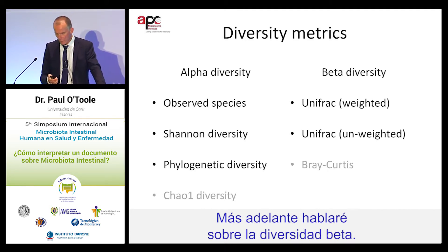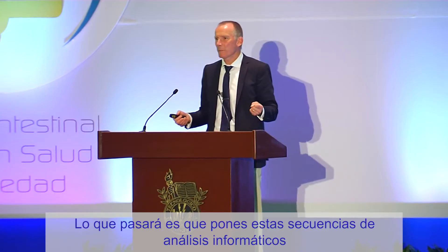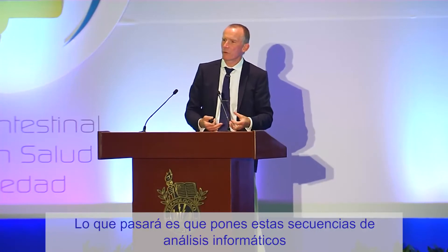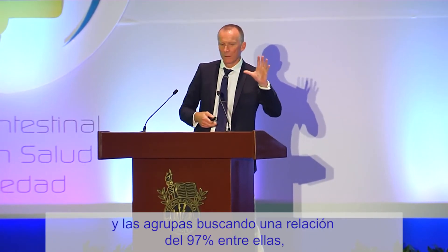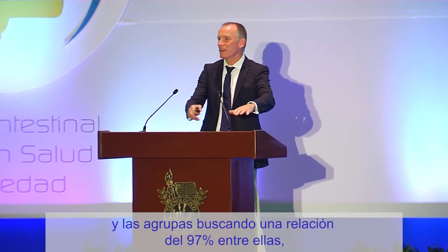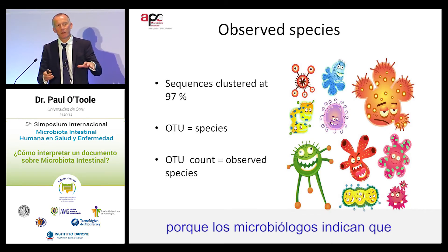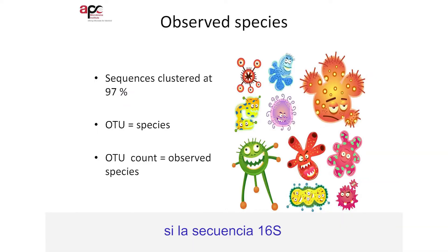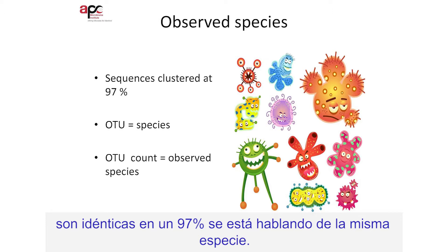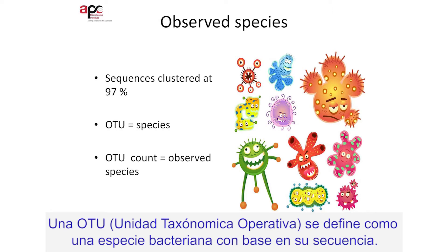What happens is that you put these sequences through a bioinformatic pipeline and you put them into groups if they're 97% related to each other. Classically, microbiologists have said that bacteria that have a 16S sequence that's 97% identical are the same species. An OTU is simply a sequence-based bacterial species definition.